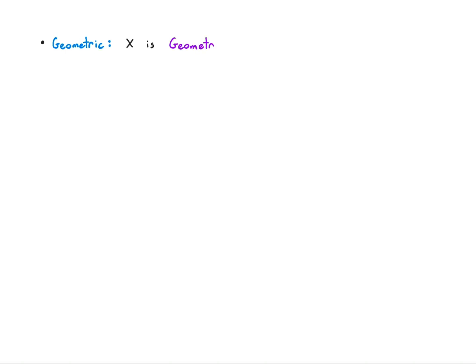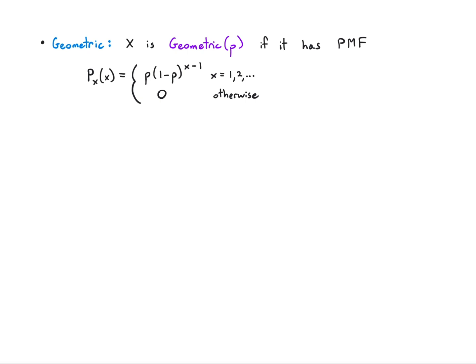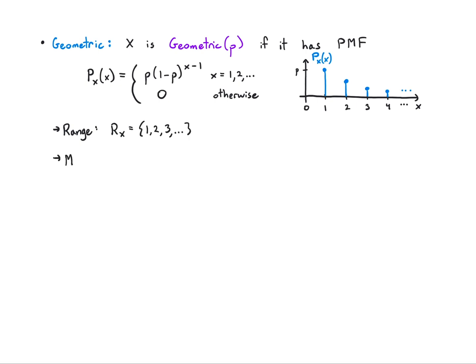Let's move on to a geometric random variable. X is Geometric(p) if it has PMF: p(x) = p * (1 - p)^(x - 1) for x = 1, 2, 3, ... up to infinity, and zero otherwise. It only takes values on the natural numbers and decays geometrically as the value increases. To visualize that, the first value is p starting at x = 1, and it just decays from there.